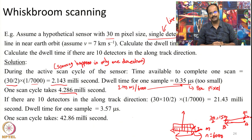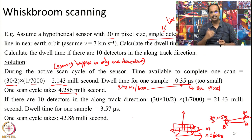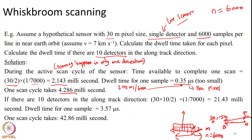Now we will see what happens if we have 10 detectors in the along-track direction — that is whisk broom scanning. If we have 10 detectors in the along-track direction and still assume scanning takes place in only one direction, the time available for active scan becomes 2.143 milliseconds × 10 = 21.43 milliseconds.